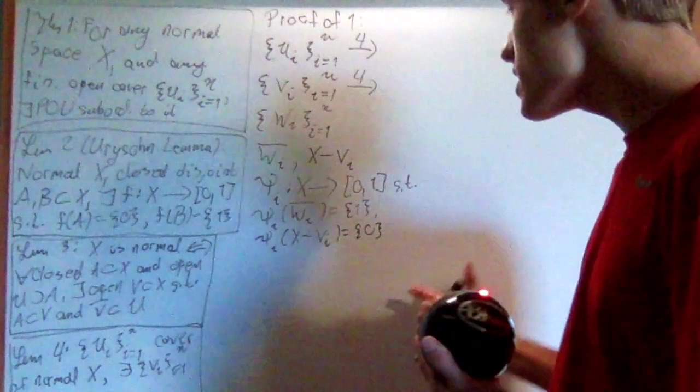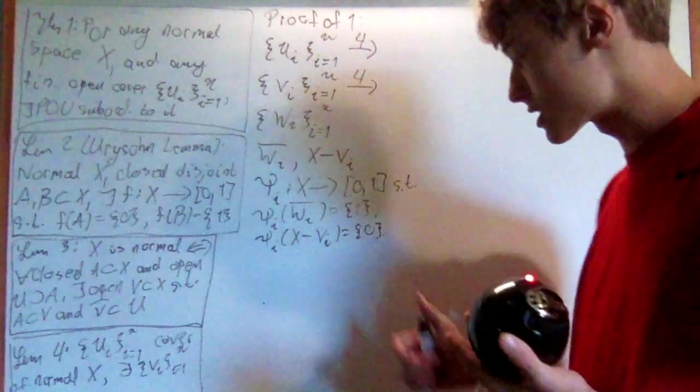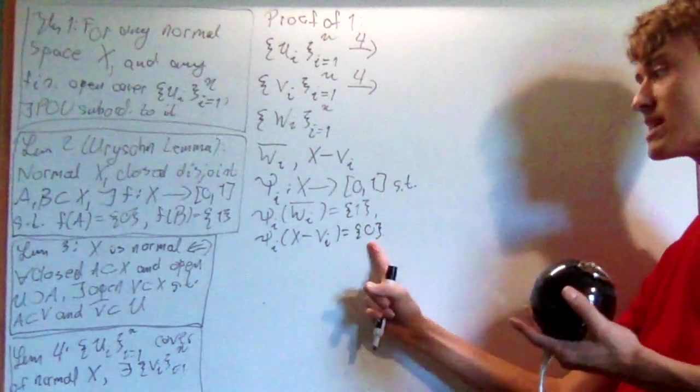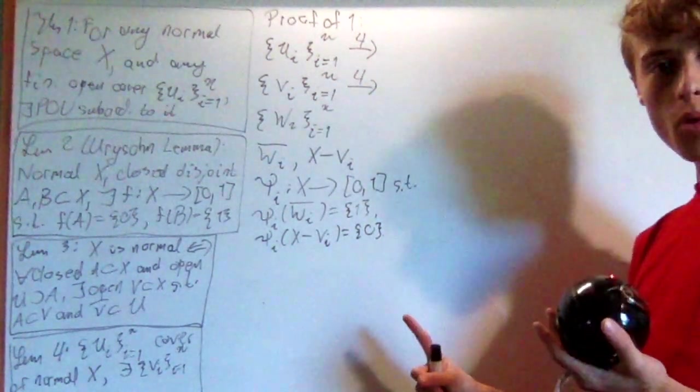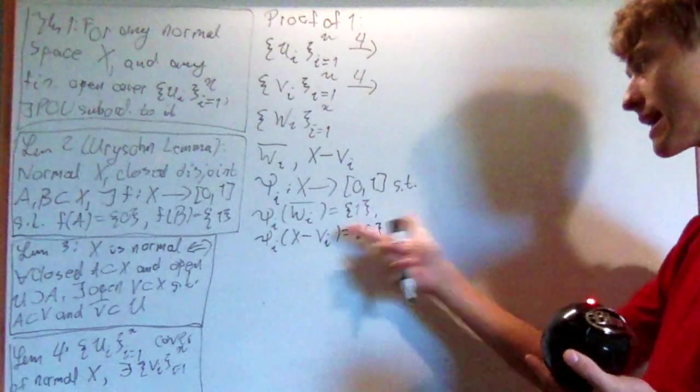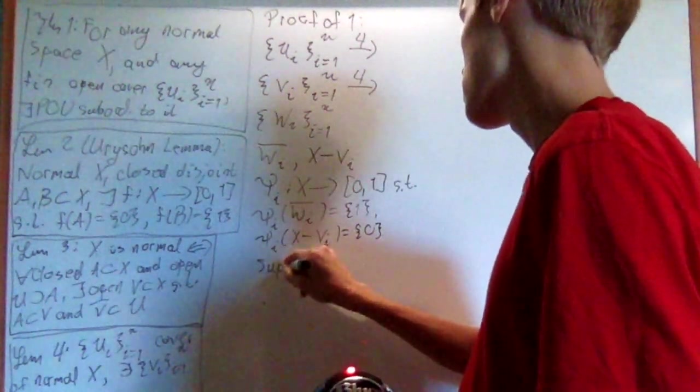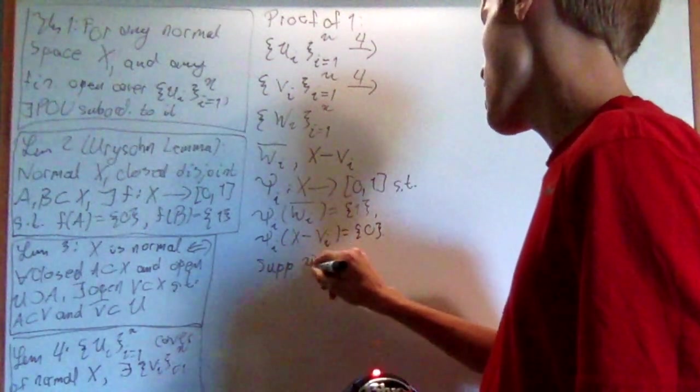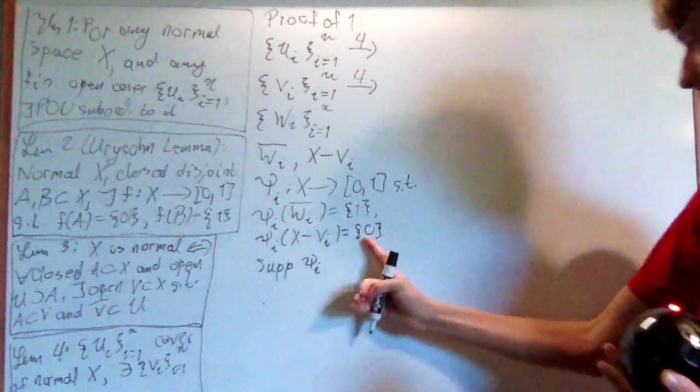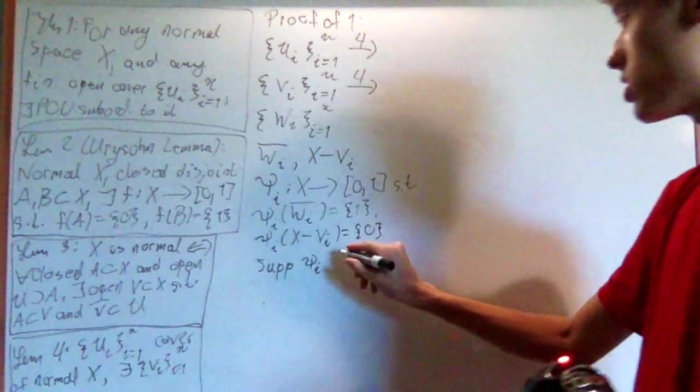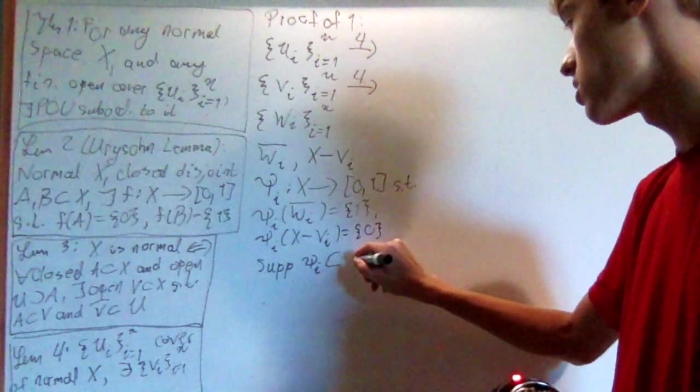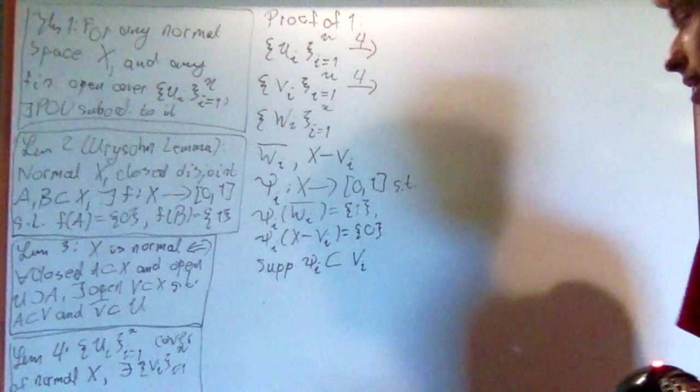And then we can create a new function psi i that goes between x and 0, 1 such that psi i of w i bar is 1 and psi i of x removing v i is 0. Now the reason why I'd want to do this is for the supports. This will always be equal to 0. And the support works when we're setting it equal to 0. And so if I do the support of psi i, this fact right here, this must be a subset of v i bar.